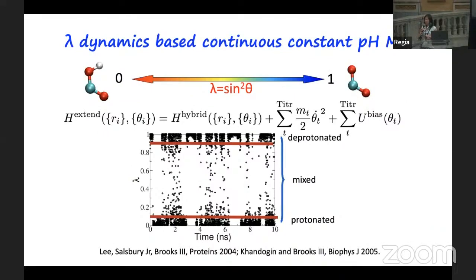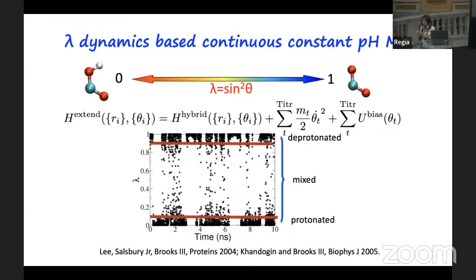In the lambda-dynamics-based scheme, we describe protonation and deprotonation using a continuous variable. Lambda can be expressed in various functional forms; we arbitrarily chose the functional form of sine-squared theta, such that lambda is naturally bounded between zero and one, where zero describes the protonated state and one describes the deprotonated state. During the simulation, lambda hops between the two states, and you will see these mixed states, which we discard at the end. We use a biasing potential to keep the population of these mixed states very low. We use a cutoff — traditionally 0.2 or 0.8 — to classify sites as protonated or deprotonated.